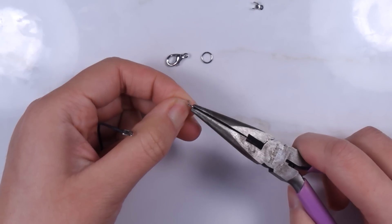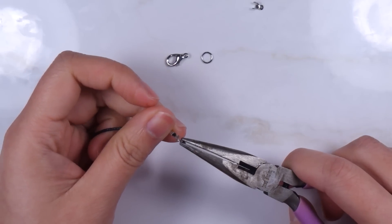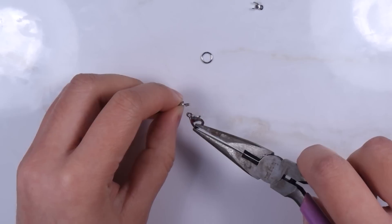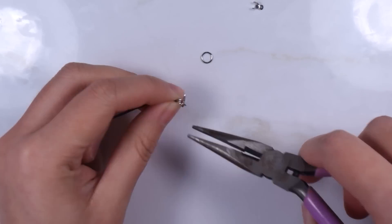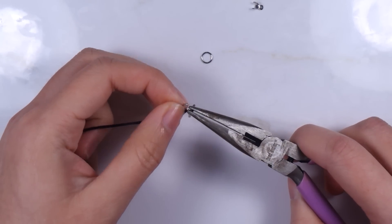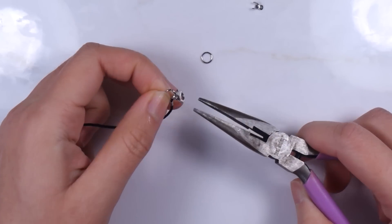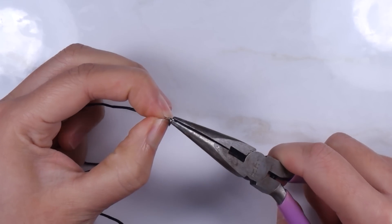Then insert a jump ring and a lobster clasp. Do the same on the other end.